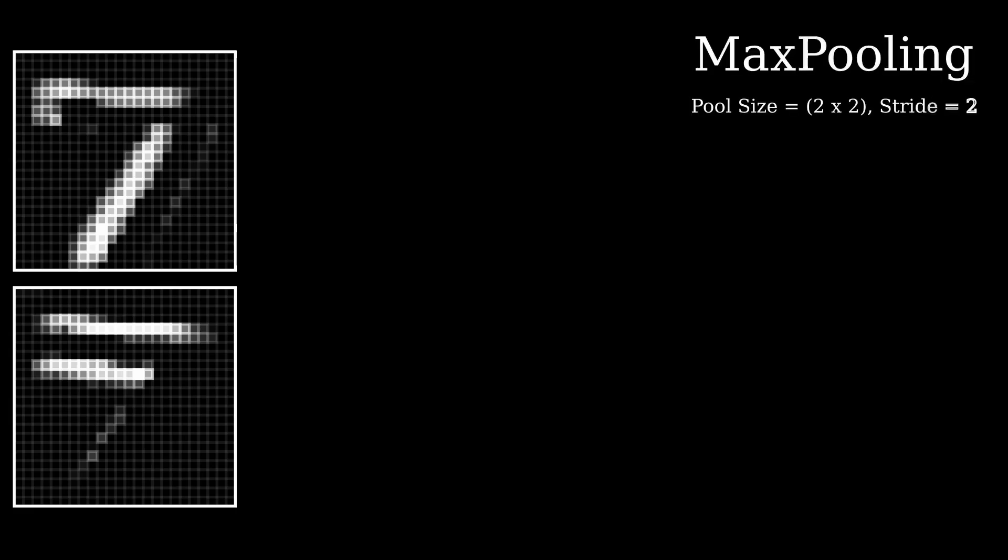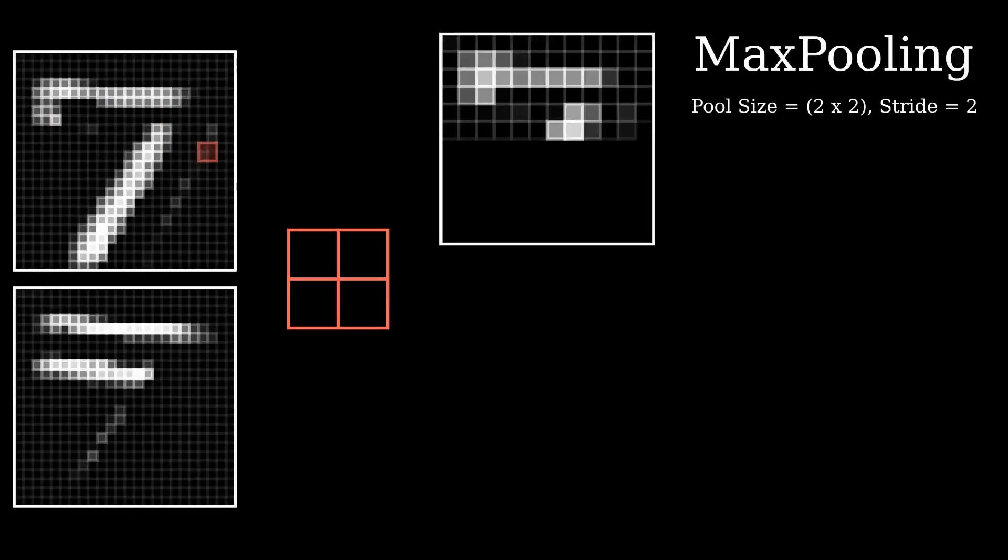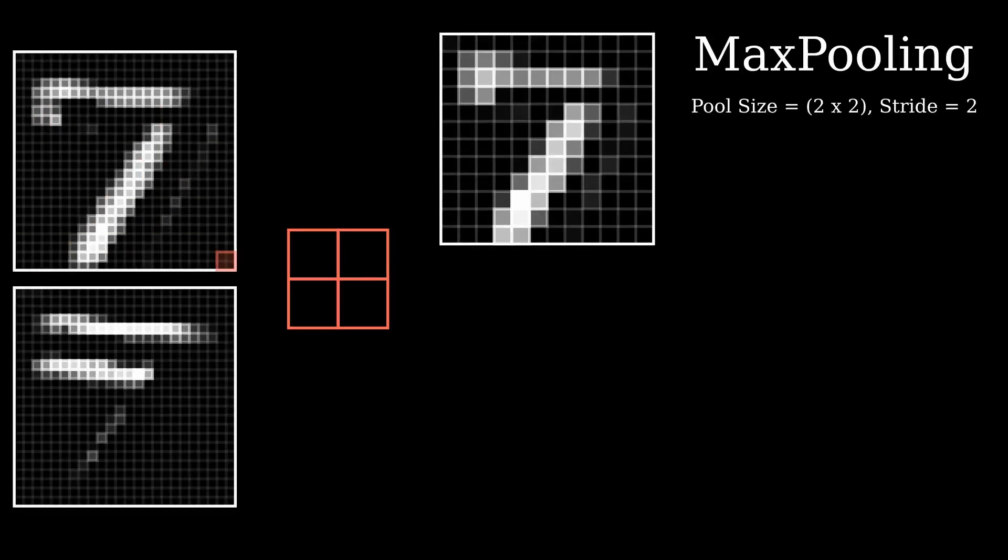Next up is the max pooling. We'll use a pool size of 2x2 and a stride of 2. We run the pooling for each of the channels and output them respectively.